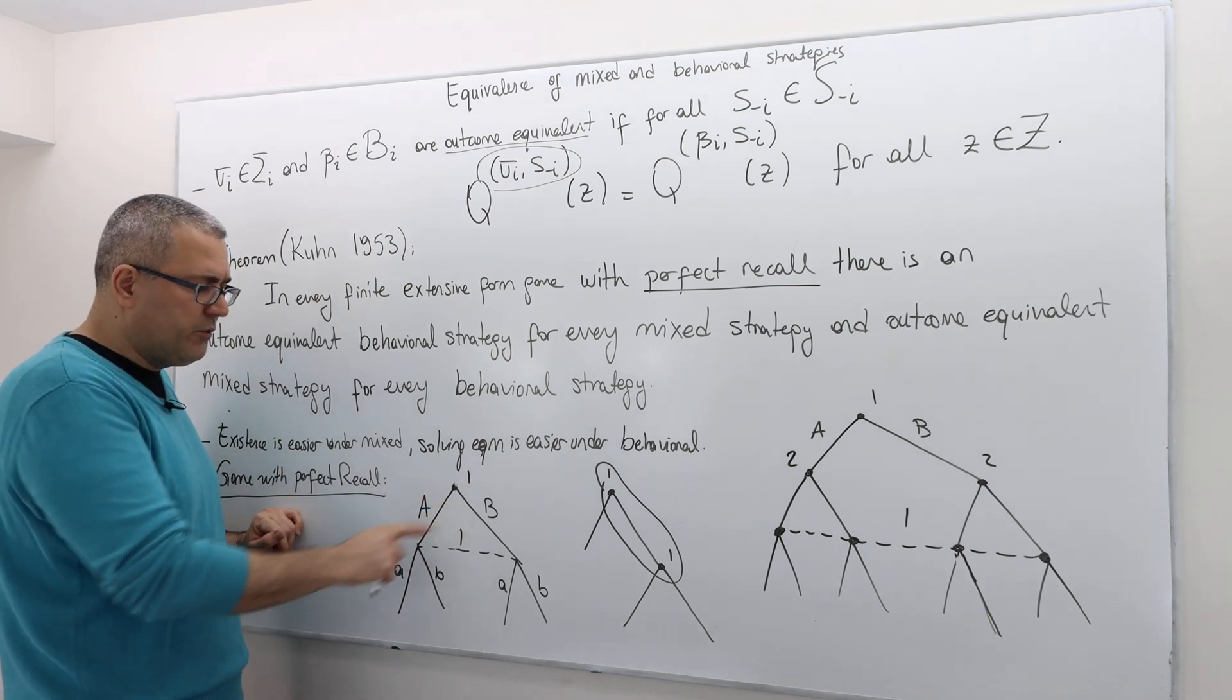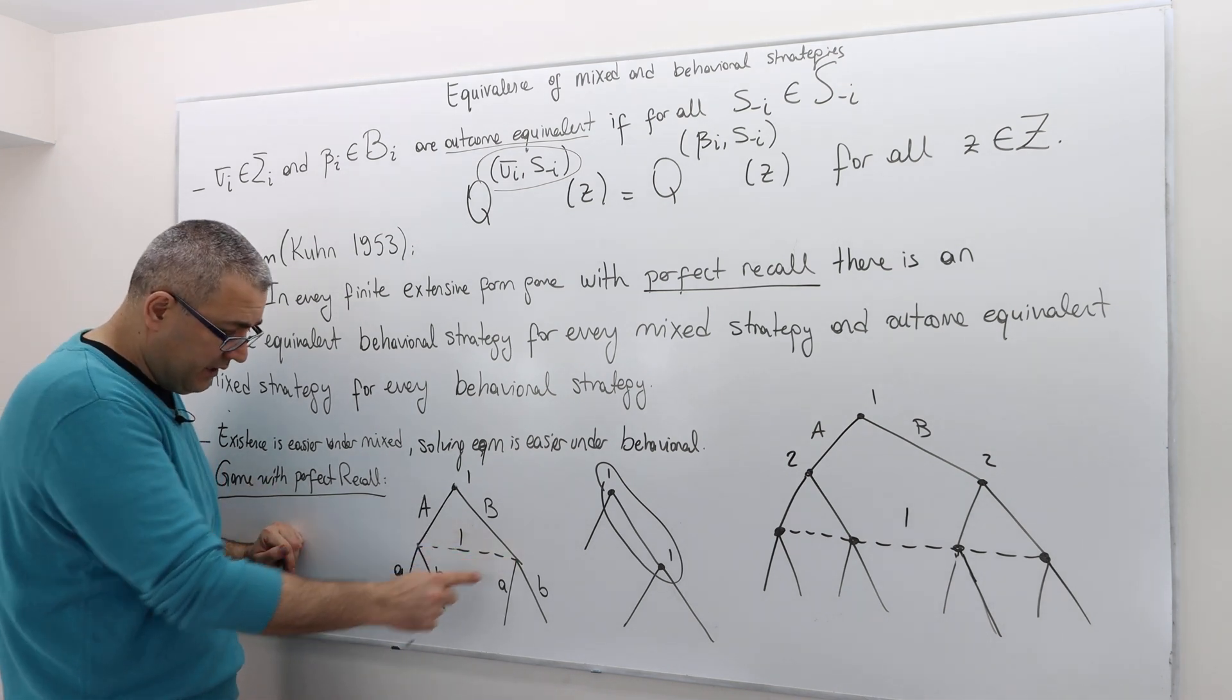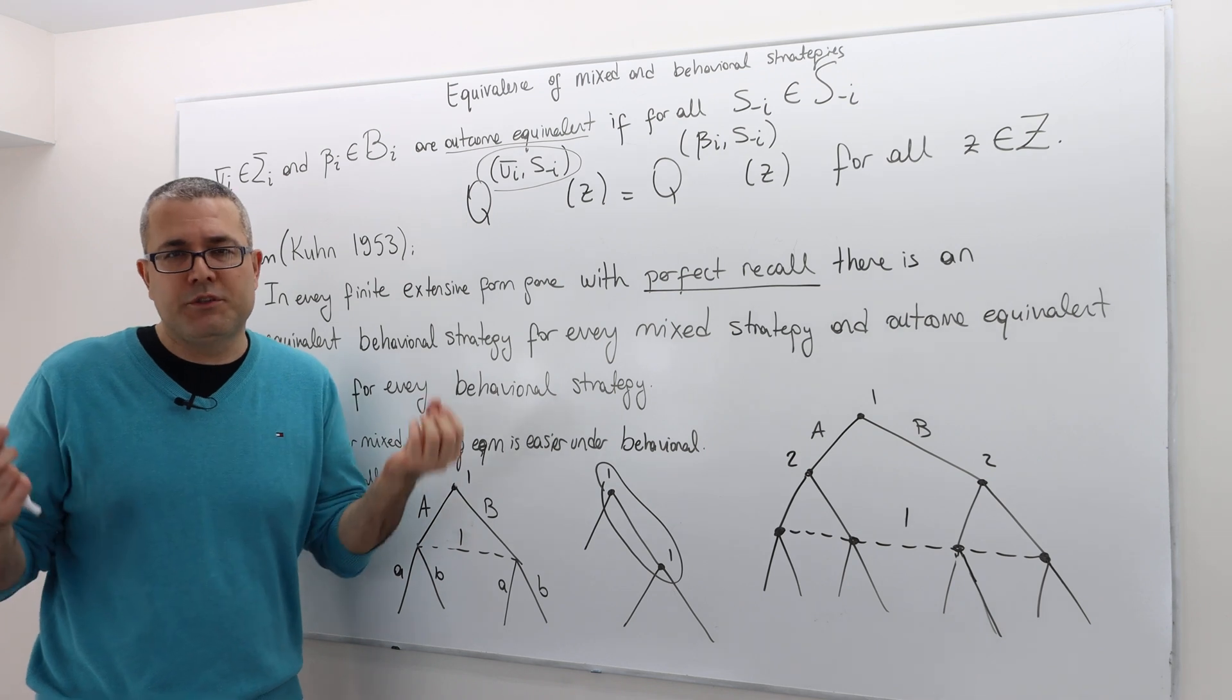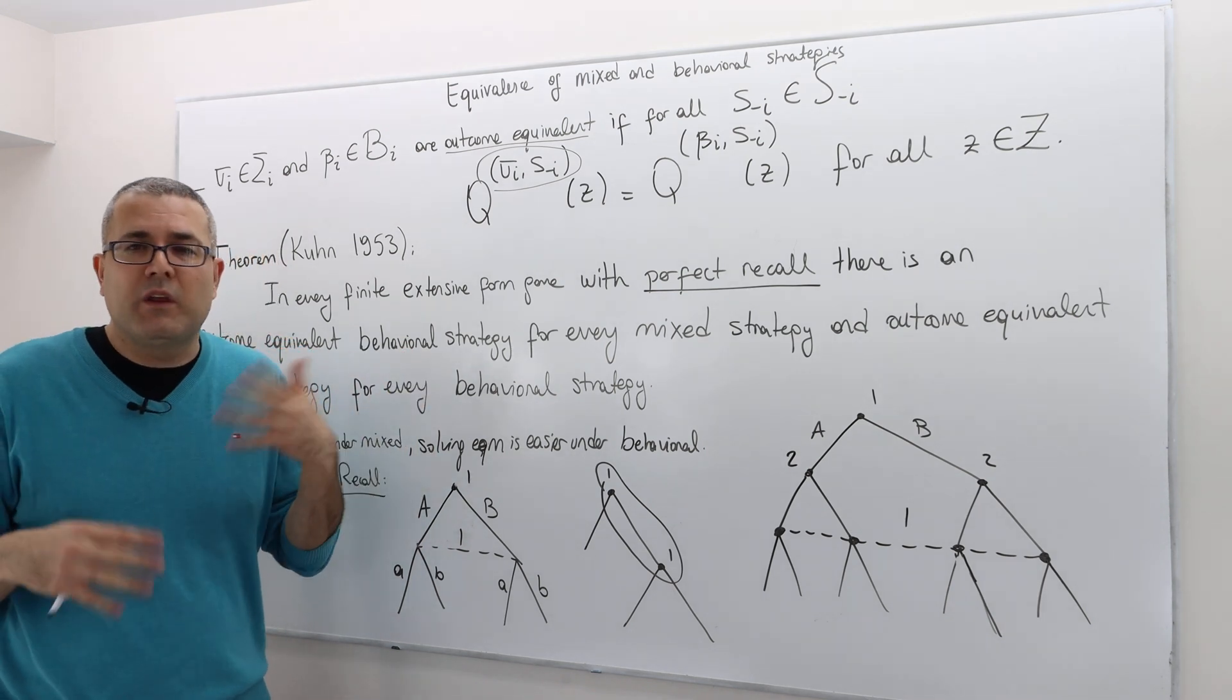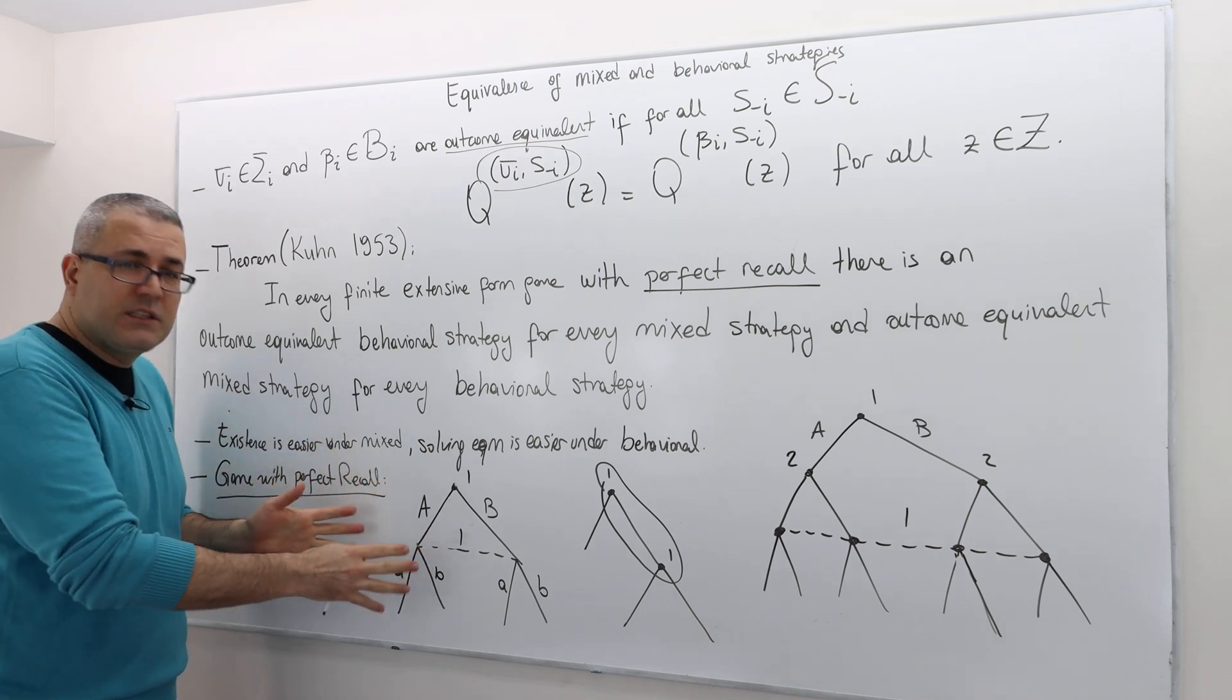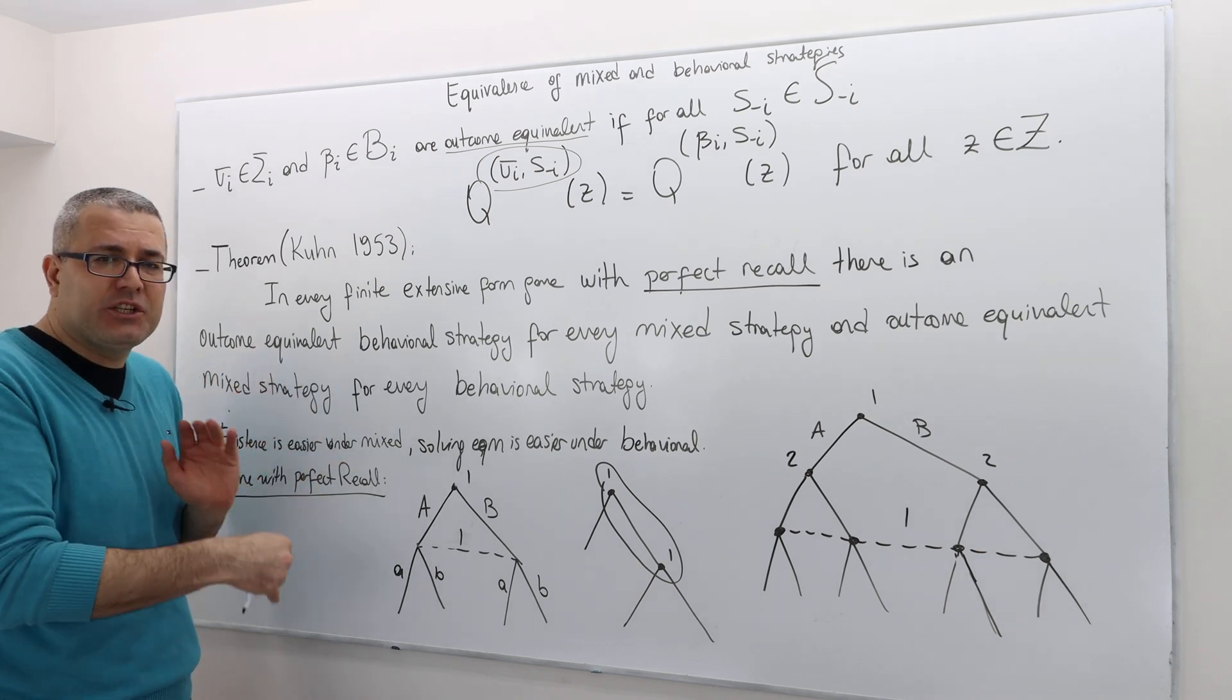Player one moves, chooses either A and B, and then he chooses small a and small b. But these two decision notes are in the same info set, which means player one actually forgets what he played, which we oftentimes do, right? We forget whether we did something or not. So this is kind of a forgetful guy. So for that reason, this is a game with imperfect recall. He cannot recall his actions, previous actions.